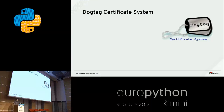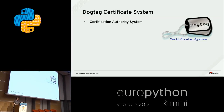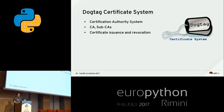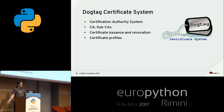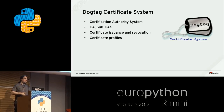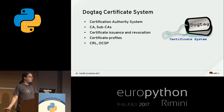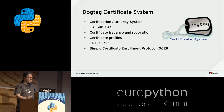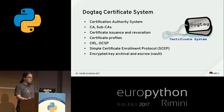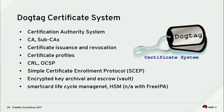DogtTag is FreeIPA's CA server — a certification authority where you can have sub-CAs, manage the full certificate lifecycle, use different profiles for VPN or web servers, handle CRL and OCSP for revocation, support the SCEP protocol, and do key escrow. HSM smart card support exists in standalone DogtTag but isn't supported within FreeIPA.